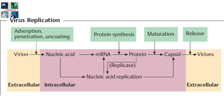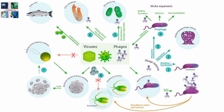Some viruses undergo a lytic cycle and some a lysogenic cycle. In the lysogenic cycle, the viral genome is known as a provirus, or in the case of bacteriophages, a prophage. When the host divides, the viral genome is also replicated. The viral genome remains mostly silent within the host, but at some point the provirus or prophage may give rise to active viruses which can destroy the host cell.